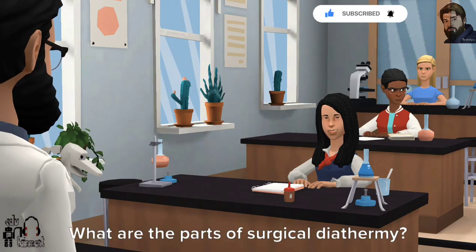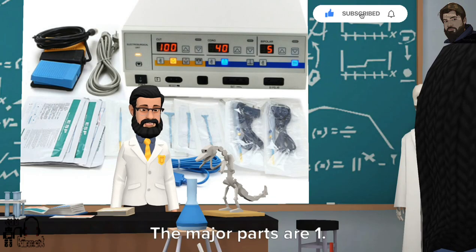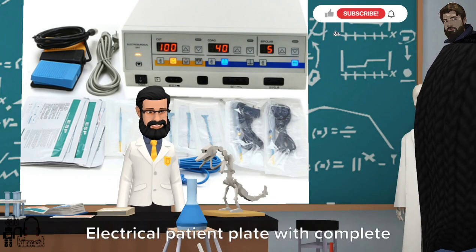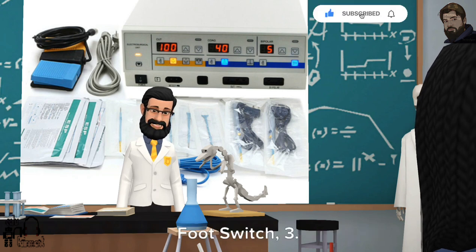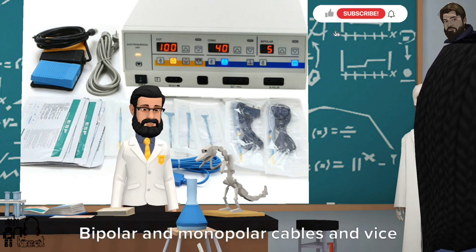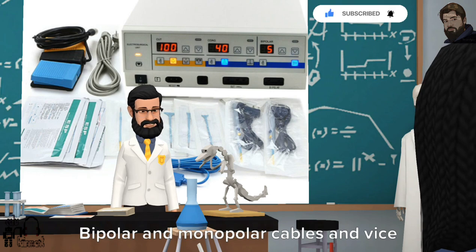What are the parts of surgical diathermy? The major parts are: 1. Electrical patient plate with complete set, 2. Foot switch, 3. Bipolar and monopolar cables.